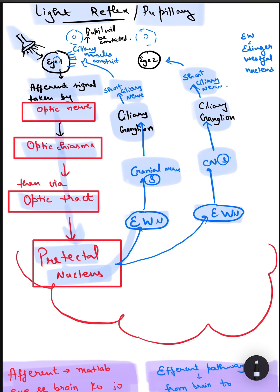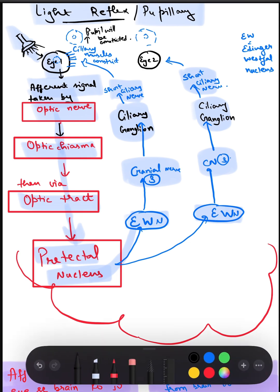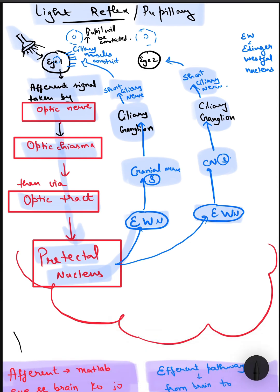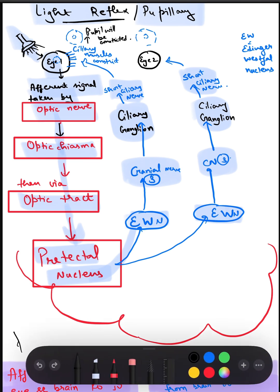So in bright light, the pupil will be constricted. I hope you guys understand the topic. Thank you.